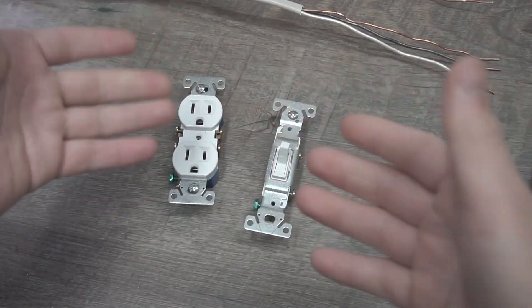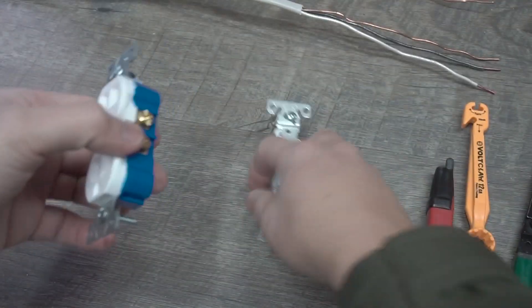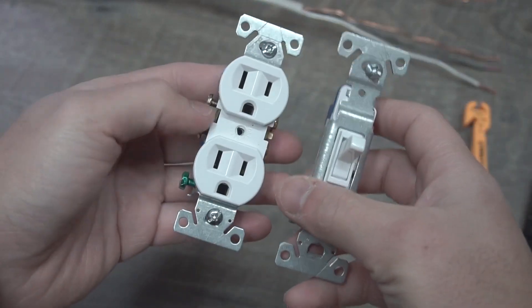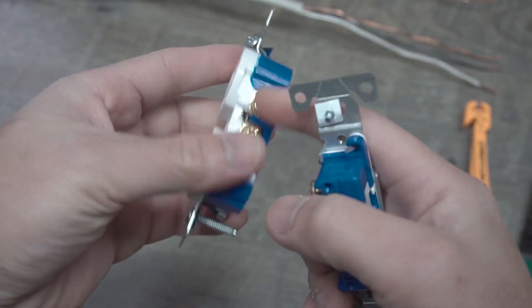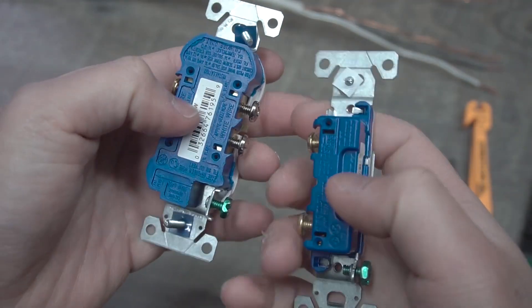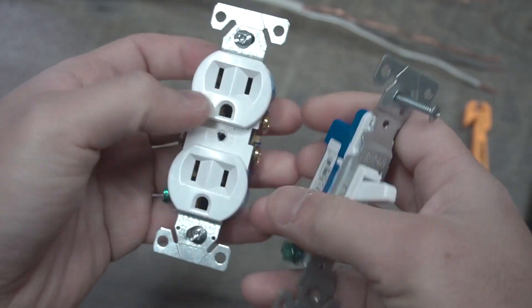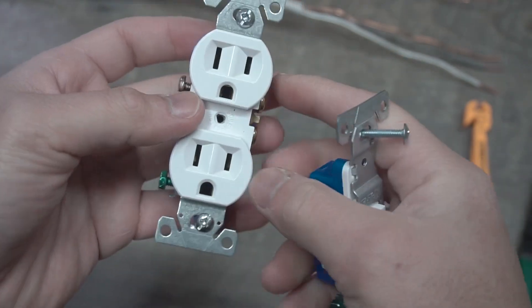Now, moving on to the duplex receptacle or outlet and switch that you'll be using, it all depends what you want to use. These were residential. You can tell that these are residential because they are cheaply made. It's blue at the back and it's not well constructed, and sometimes it's not even tamper resistant.